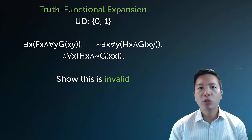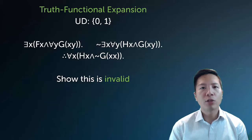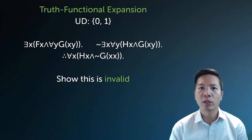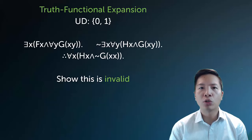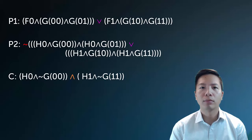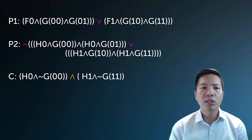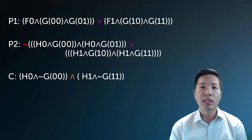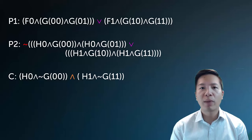Why is this helpful? Because using this truth functional expansion allows us to create abstract finite models quite easily. Let's show that this argument is invalid. The first thing you would have to do is actually do the correct truth functional expansion. I strongly suggest you pause the video now and go ahead and write it out. The next slide will just have the solution ready for you, so give it a shot. Here's the solution in terms of the truth functional expansion. Notice this doesn't really look much at all like my original statements, but that's okay — it's because there are no quantifiers and I've expanded it to the universe of two members, zero and one.